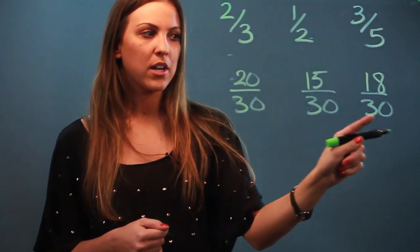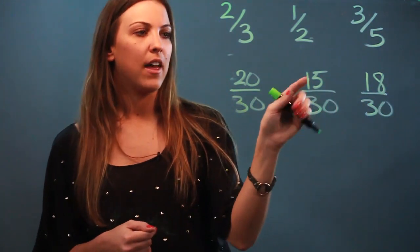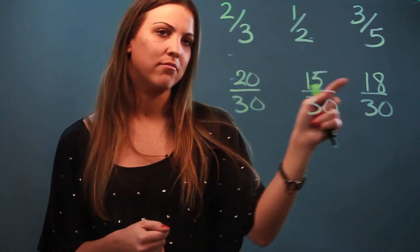Now that all of my fractions have the same denominator, I can just compare their numerators. And if I do that, I see that 15 over 30 is not between 20 and 18.